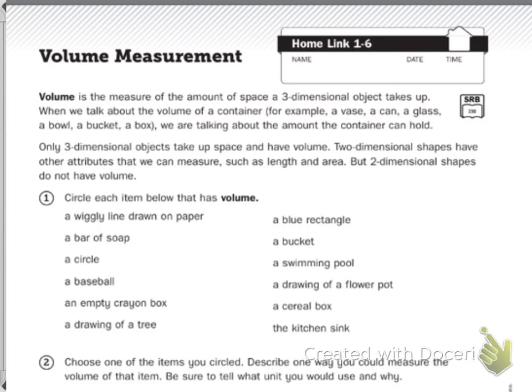Number one says: circle each item below that has volume. First one says a wiggly line drawn on paper. If I have a wiggly line, can it hold anything? No,